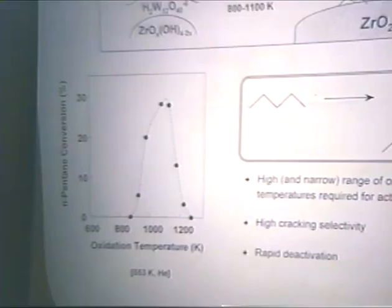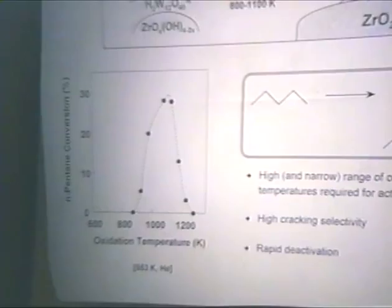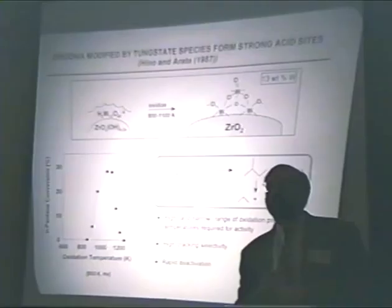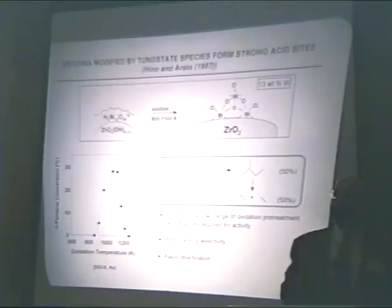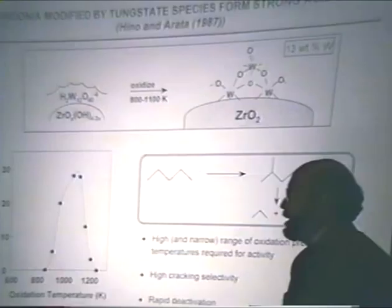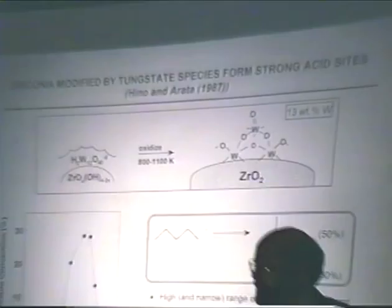A few years later, we solved both problems by realizing that in the presence of platinum in this system, able to dissociate hydrogen, and most importantly when hydrogen is present as H2 in the gas phase, we were able to get not only stable activity but a much lower cracking selectivity. There are two mysteries here: why a catalyst would have activity only over such a narrow range of oxidation temperature, and what is this hydrogen effect that has such a significant impact on activity, stability, and selectivity.